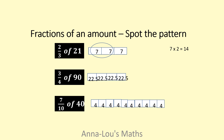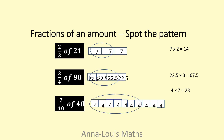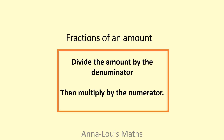Three-quarters of ninety: ninety divided by four, times by three. Forty divided by ten, times by seven. So when I've got fractions where the numerator is not a one, divide by the denominator, multiply by the numerator. That's going to work for every single fractions of an amount question.